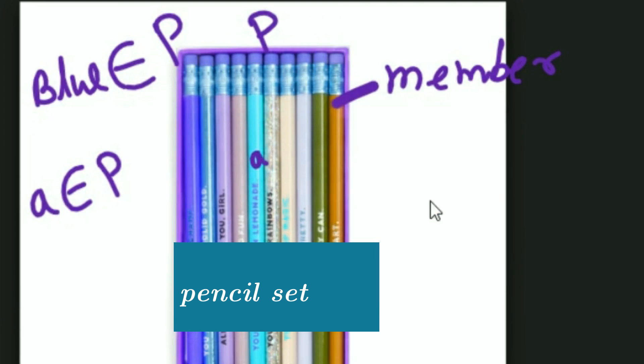And suppose there is another pencil here, and the name of the pencil is D. This is out of this box, so it is not the member of this set. We can say D is not the member of set P, or D does not belong to P. This is the sign of 'does not belong,' meaning D is not a member of this set.